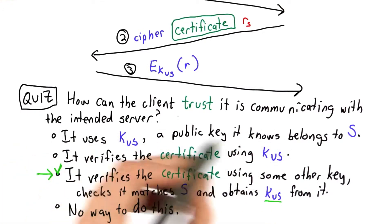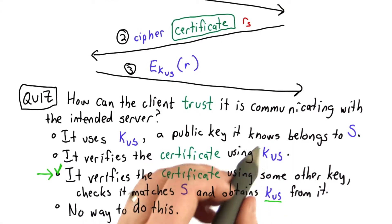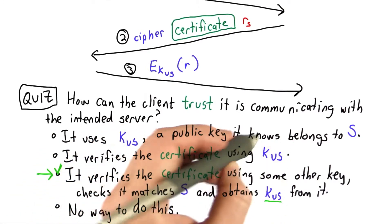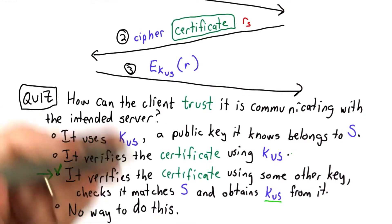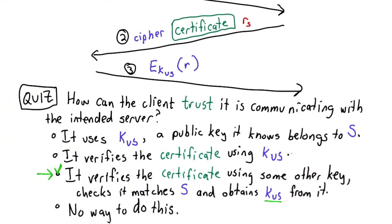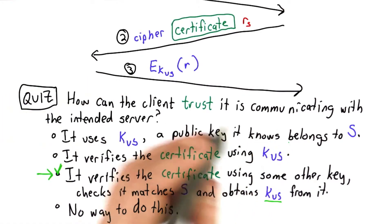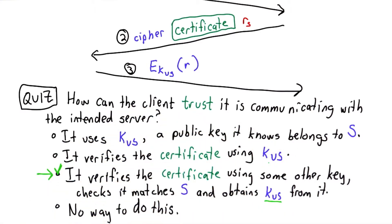Verifying the certificate using the server's public key doesn't make any sense, because that key was provided by the server. So if we used the server's public key to verify the certificate, that would be a self-signed certificate — it wouldn't prove anything, since the signature is being verified with the key provided by the person claiming the signature.